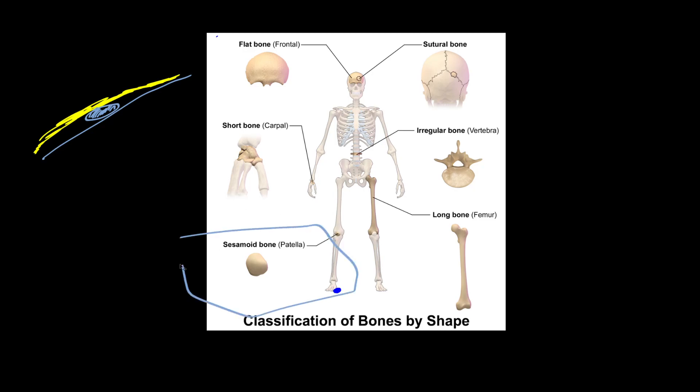But sesamoid bones are a useful little category just for that reason. For most people, the only ones they have are the patella, and then the sesamoid bones underneath the ball of your foot. Maybe you've seen those on anatomical models, maybe not. Here's the first metatarsal right here, and then here's the phalanges of the big toe.